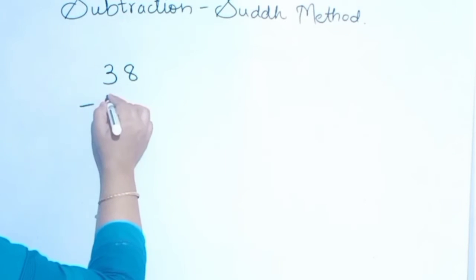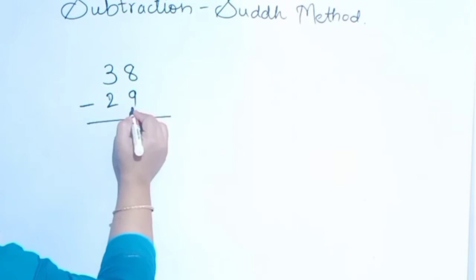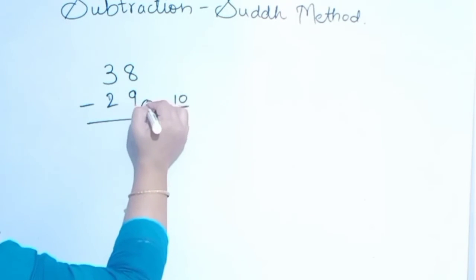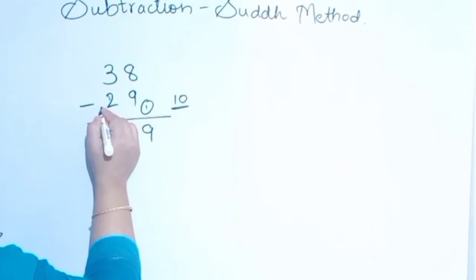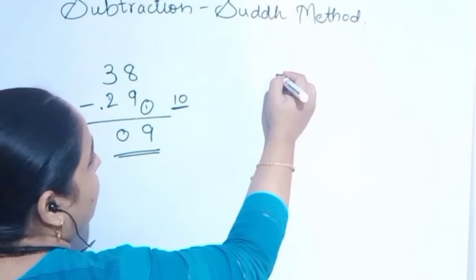38 minus 29. How many less is this from the complement number? 1. So, 8 plus 1 is 9. And we have done a dot here. 3 minus 3 is 0. This is the answer.